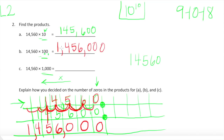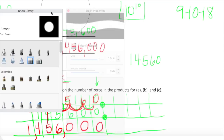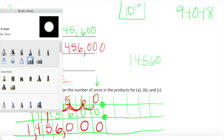Look at how the number has grown — from 145,600 up to 1,456,000. Now we're going to multiply by 1,000. Our digits are now going to shift to the left three columns, because there are three zeros in 1,000. Let me erase this as quickly as possible so we have workspace to continue.